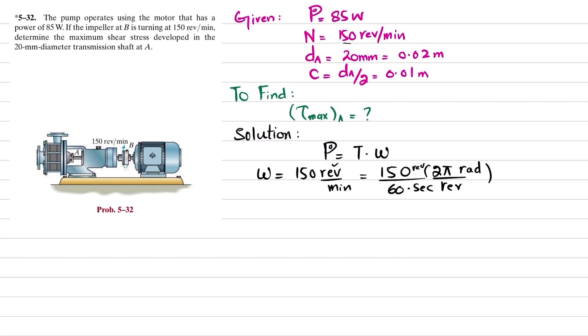We will be left with angular velocity equal to 5π radians per second. So now, power is equal to torque times angular velocity.